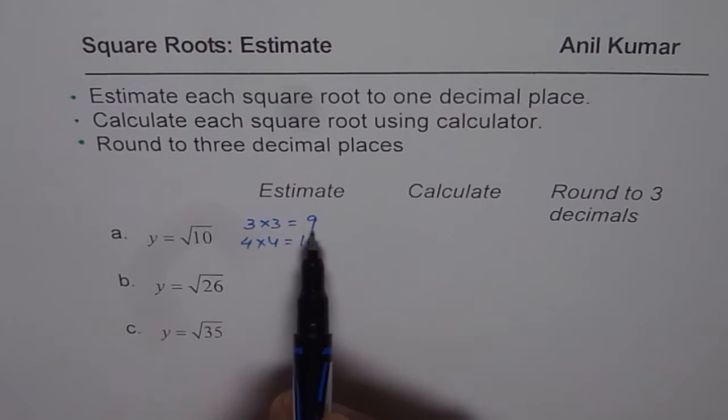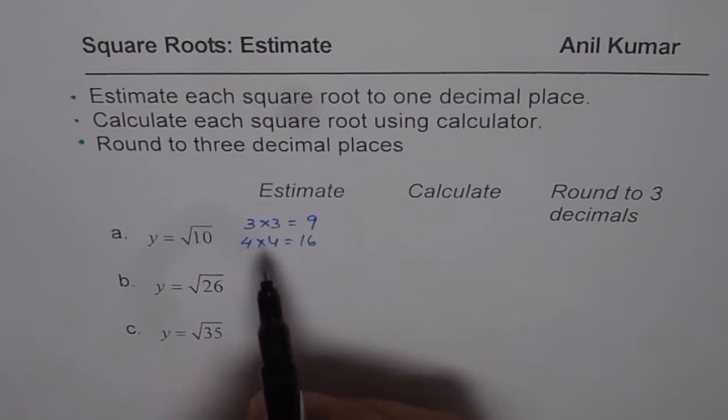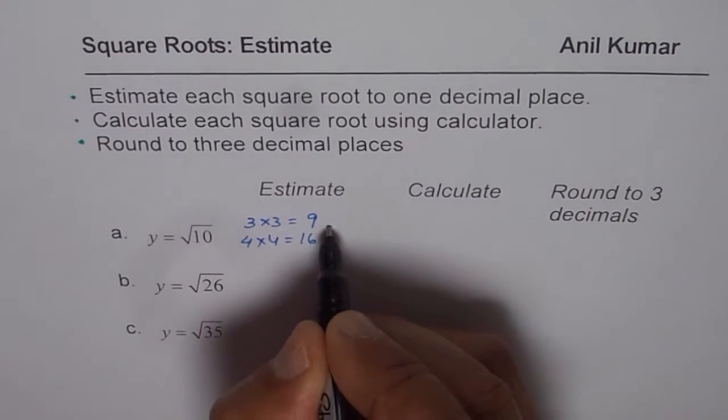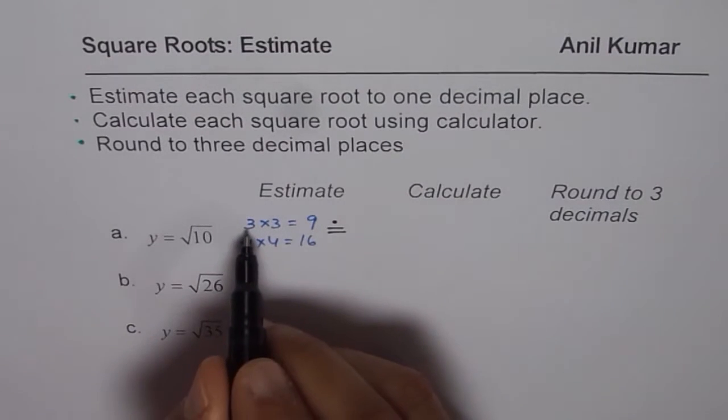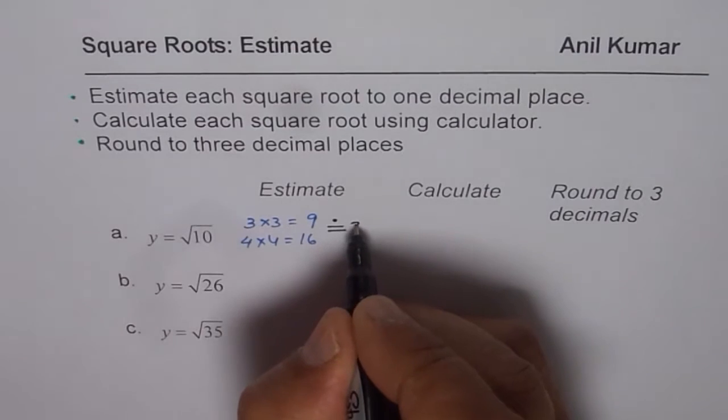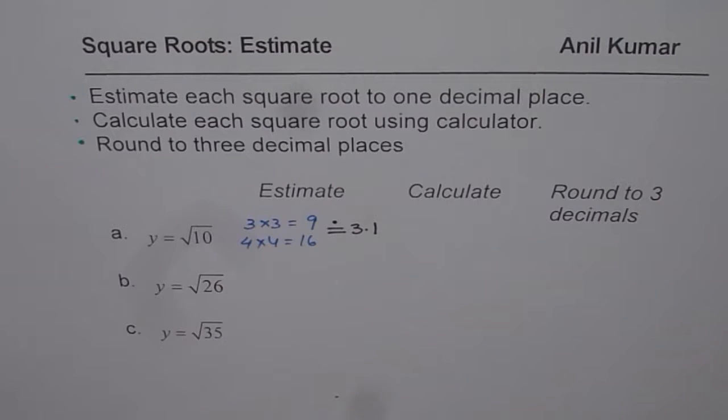Now 10 is very close to 9, so square root of 10 should be slightly more than 3. We estimate using this symbol, an equal sign with a dot on top. It should be slightly more than 3, so we write 3.1 as an estimate. Let us do the second estimate.